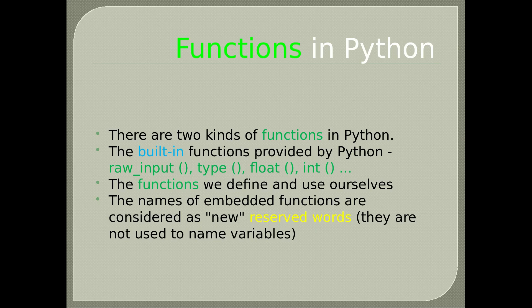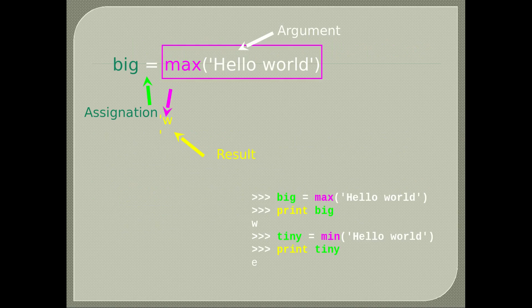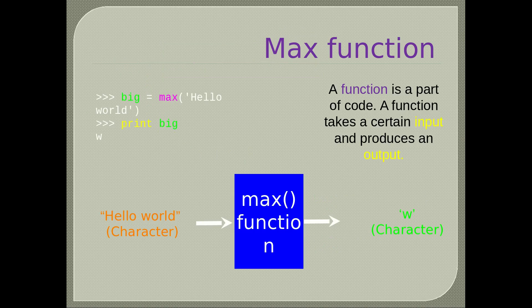In Python, a function is reusable code that takes an input argument, performs actions and returns one or more results. A function is defined with the reserved word def. A function is called by using its name, parentheses and an argument in an expression. The argument of the max function is the text 'hello world'. We assign this function and argument to the variable big. The result is 'w' since this is the letter closest to the end of the alphabet.